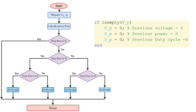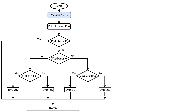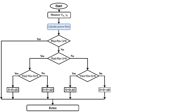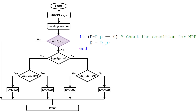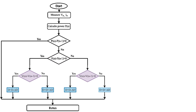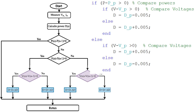Start with an initial operating point for the solar panel. Measure voltage and current from the solar panel. Calculate power, which is the product of voltage and current. Compare the power output at the new operating point with the power output at the previous point. If no change, output the previous duty cycle value; if yes, continue perturbing the duty cycle. Then compare the present voltage with the previous instant value and adjust the duty cycle accordingly.